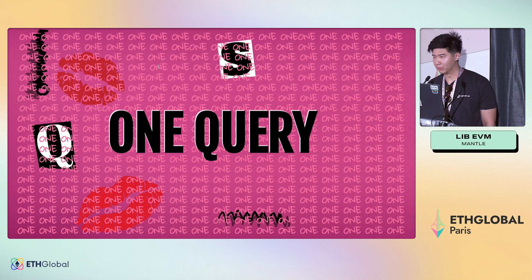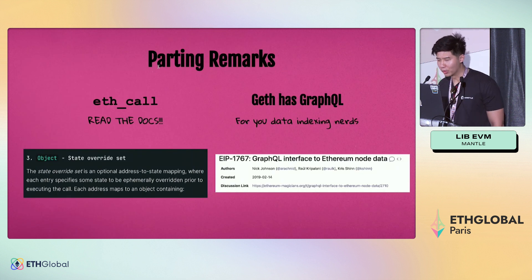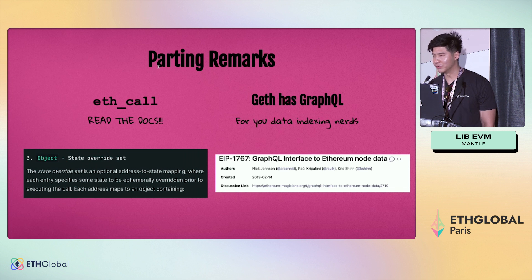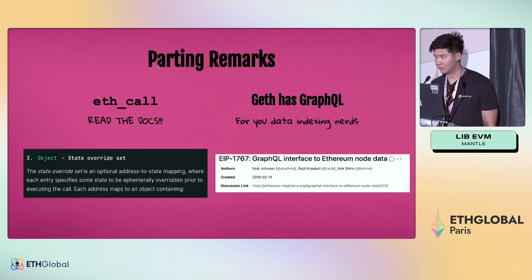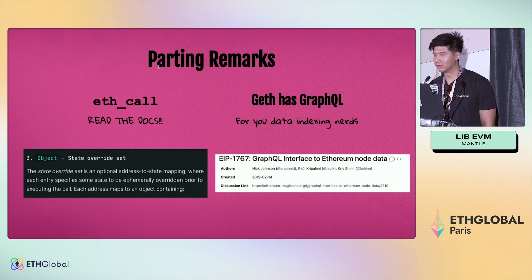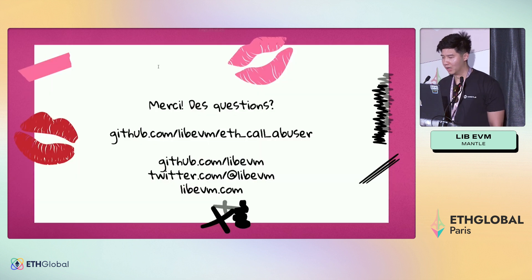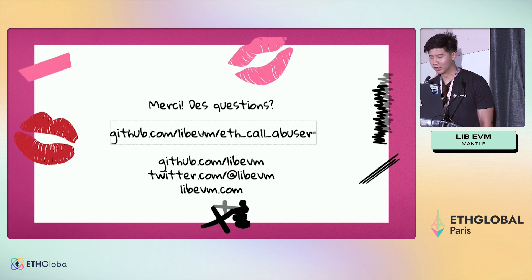And that is how you can query all the state you need for your front-end application in one query. Some parting remarks: ETH_call is really powerful — it has undocumented or little-known features such as the state override set, where you can overwrite the code or storage slots, balances, or nonces. Very useful for testing. Also, Geth — the most popular Ethereum execution layer — has a GraphQL server behind the scenes, so you can extract a lot of data through GraphQL instead of traditional RPC methods. I have a proof of concept on my GitHub at github.com/libbvm/eth-call-abuser.